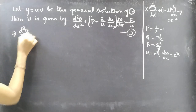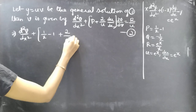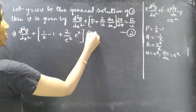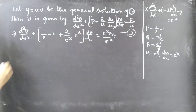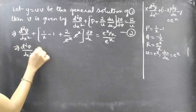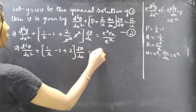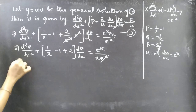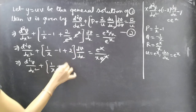Substituting P, u, and du/dx into equation 2: d²V/dx² + (1/x − 1 + 2/e^x · e^x) · dV/dx = e^x/x · (1/e^x). Here e^x cancels, giving d²V/dx² + (1/x − 1 + 2) · dV/dx = 1/x, which simplifies to d²V/dx² + (1/x + 1) · dV/dx = 1/x.